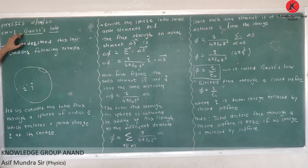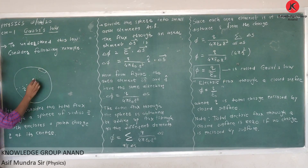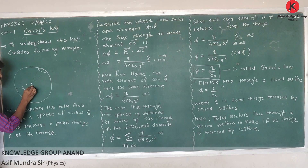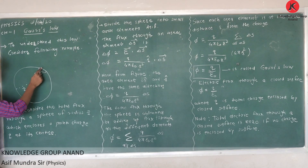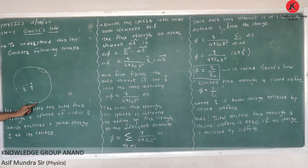What is Gauss's Law? To understand Gauss's Law, we will take one example. Consider a sphere of radius R, with a point charge Q placed at its center. We will find what is the flux passing through the surface of this sphere.